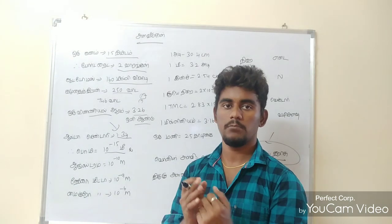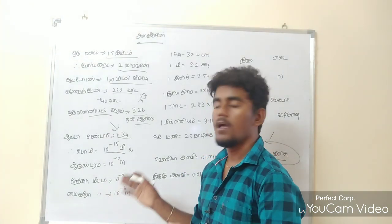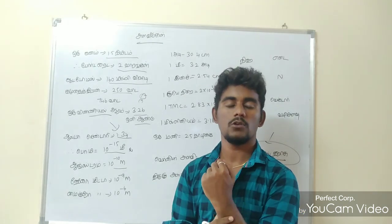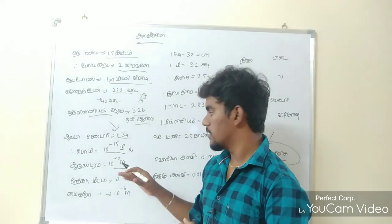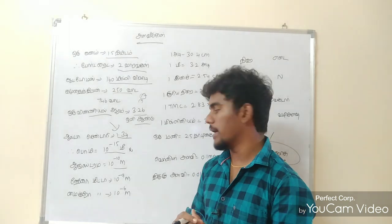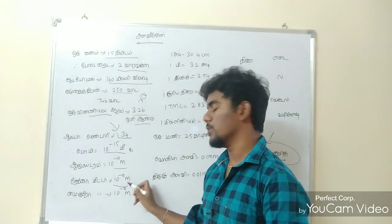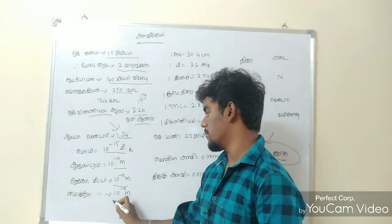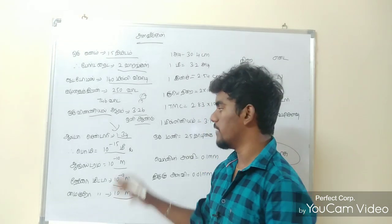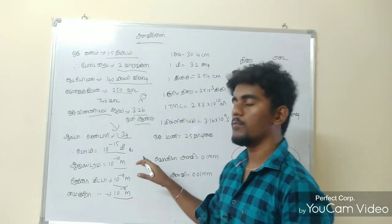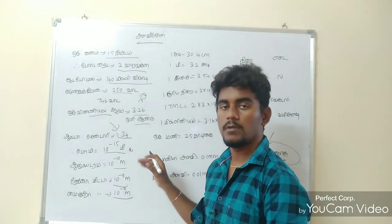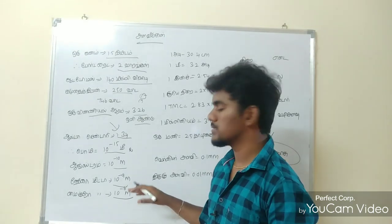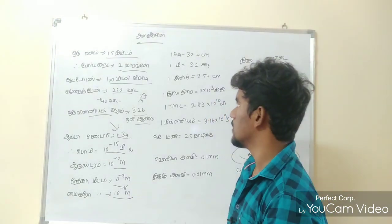Fermi is equal to 10⁻¹⁵ m. That is one Fermi. Angstrom is equal to 10⁻¹⁰ m. Nanometer is equal to 10⁻⁹ m. One micrometer is 10⁻⁶ m. We already found these values: Fermi is 10⁻¹⁵ m, Angstrom is 10⁻¹⁰ m, Nanometer is 10⁻⁹ m, Micro is 10⁻⁶ m.